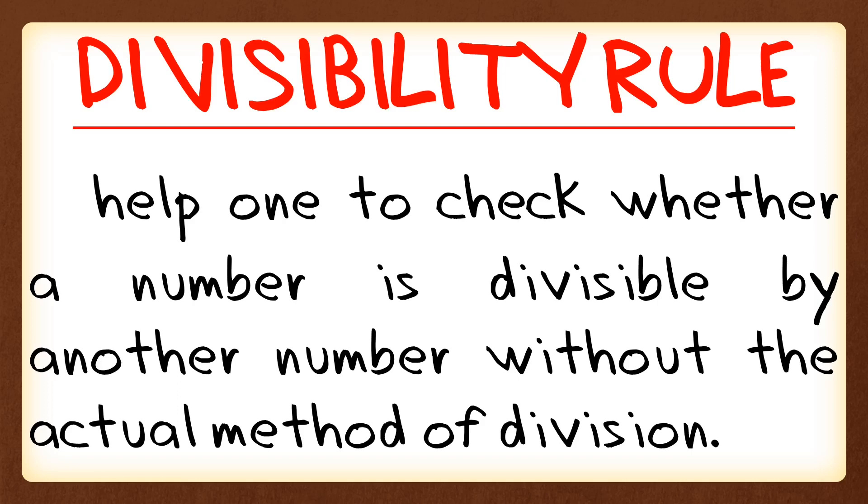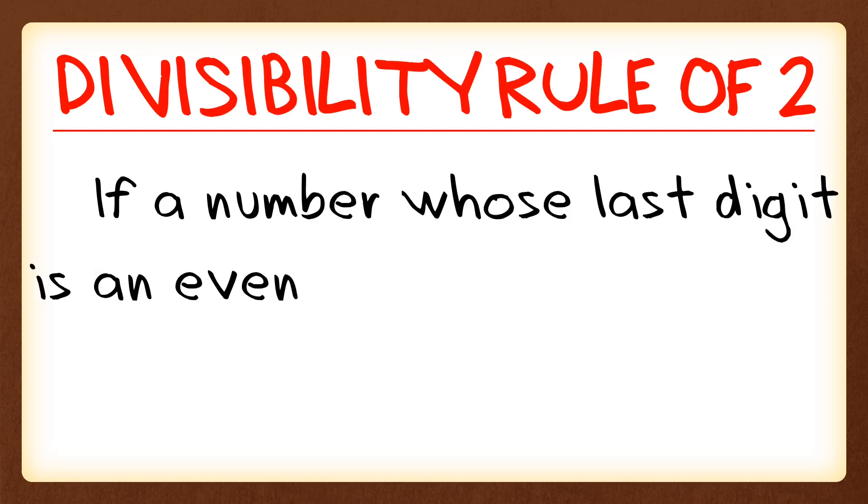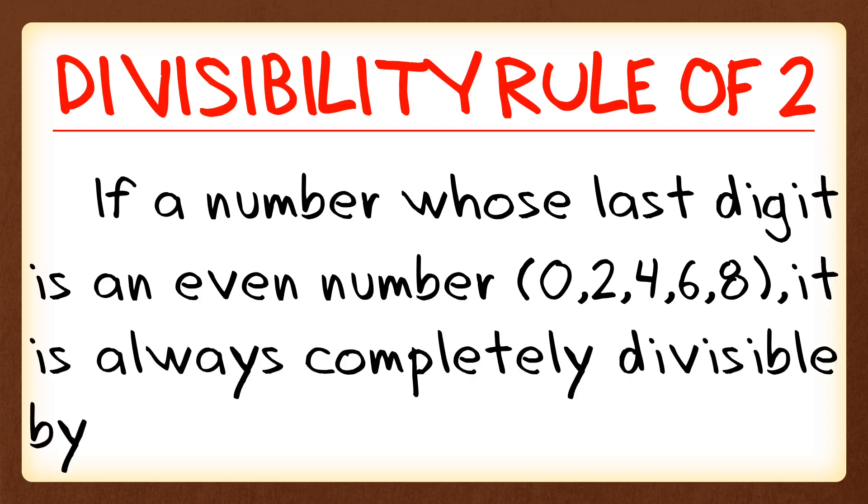And in this video, we're going to learn about divisibility rule of 2. If a number whose last digit is an even number, either 0, 2, 4, 6, or 8, it is always completely divisible by 2.